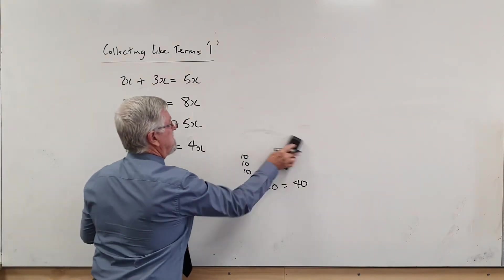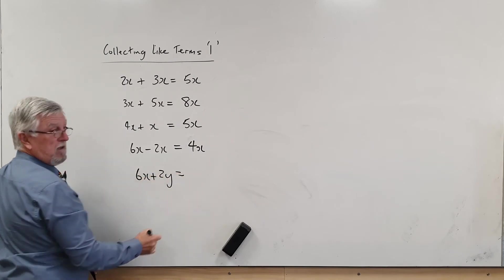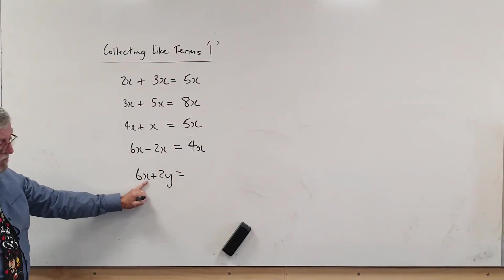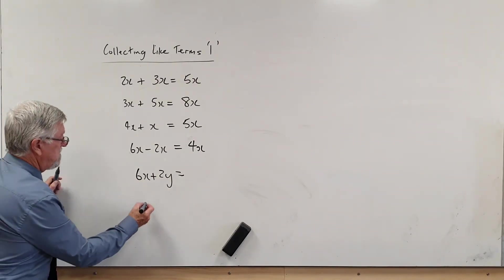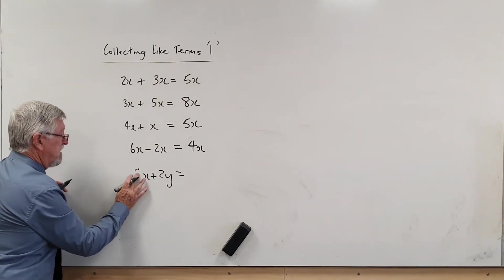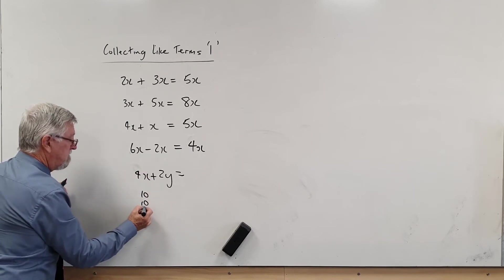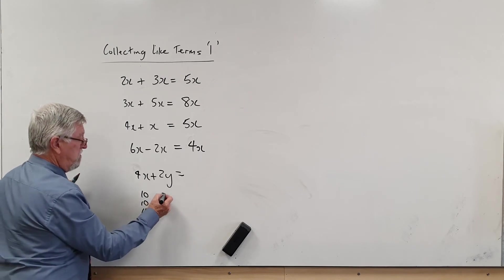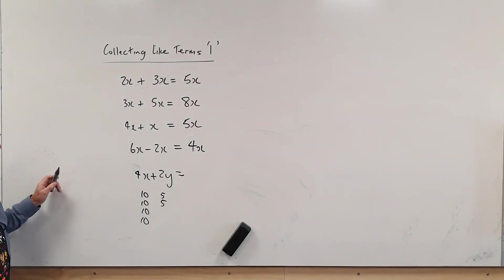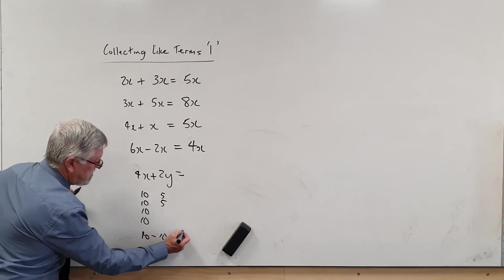But what happens if we have different letters? So if I had 6X plus 2Y, this could be a number and this could be a different number. So let's say this was six lots of ten—well, let's make it easy. Let's go four lots of ten, so I don't have to write so much. So that's four lots of ten, and if that turned out to be five, that would be two lots of five. So what I end up with is I've got my 40 plus 10, which is 50.